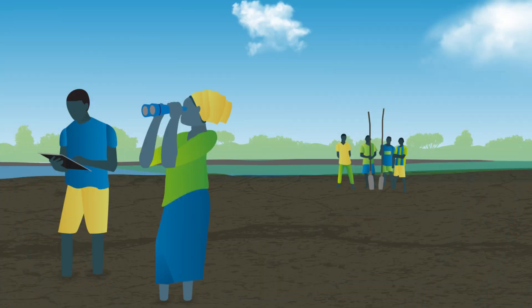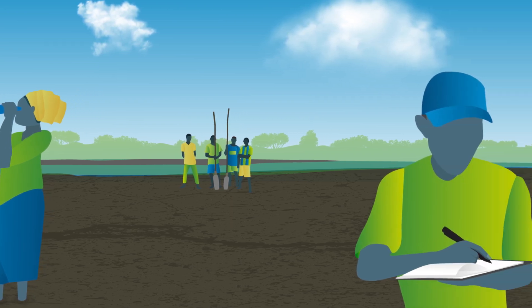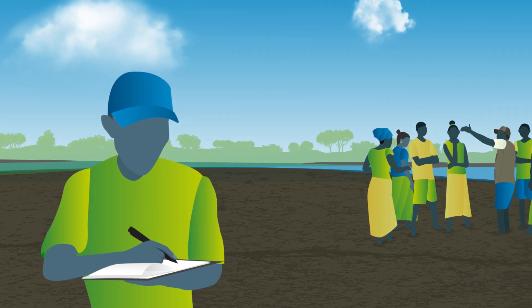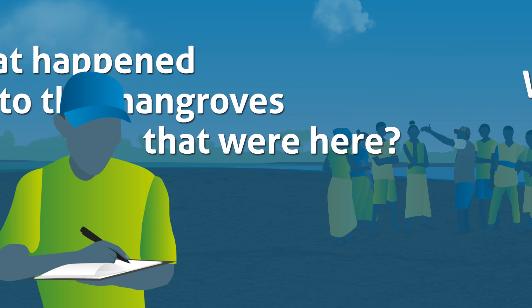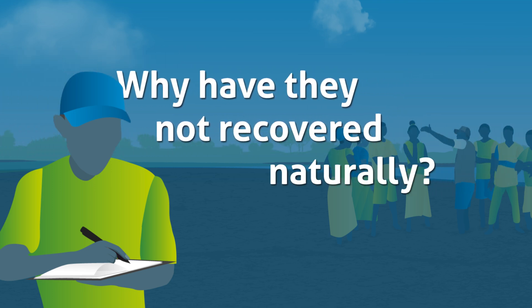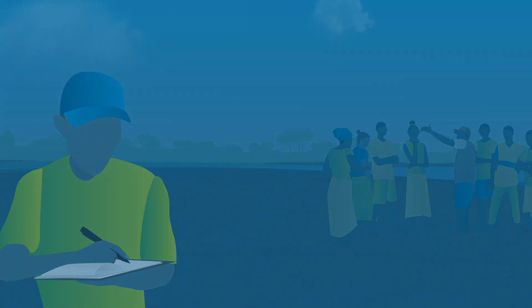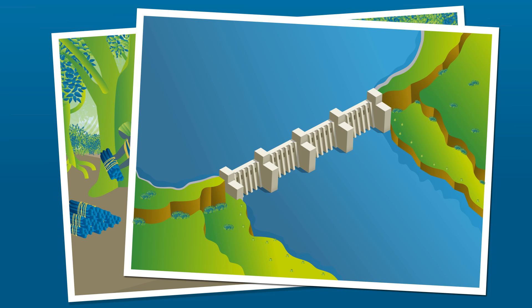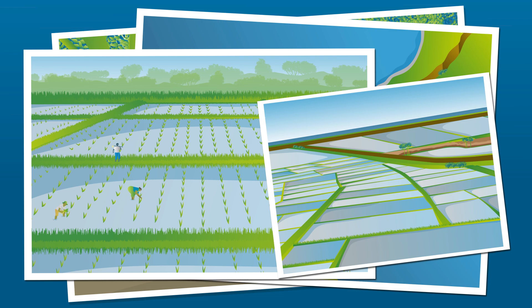You can do this with mapping tools paired with site visits. If there were no mangroves before, you should avoid introducing them, as this could destroy other important ecosystems. If mangroves were there before, ask: what happened to the mangroves that were here, and why have they not recovered naturally? This will be different for each site — for example, were they lost due to cutting for charcoal, development of a dam, rice fields, or aquaculture ponds? Understanding whether the causes of loss can be reversed is critical.